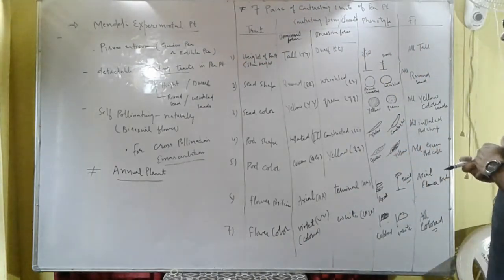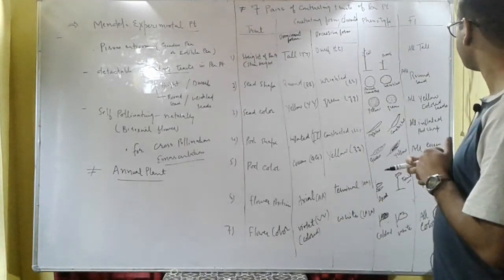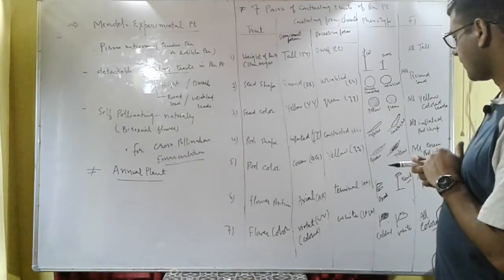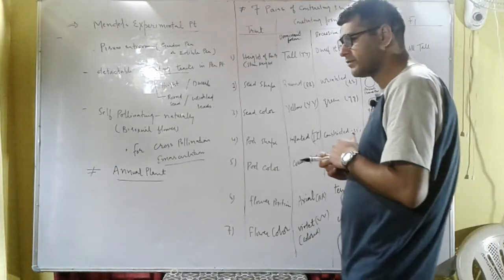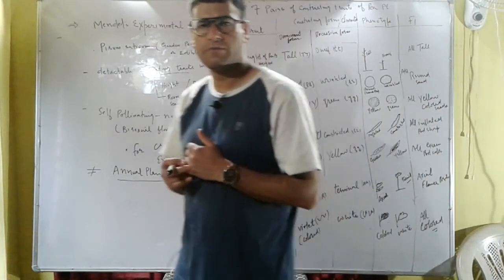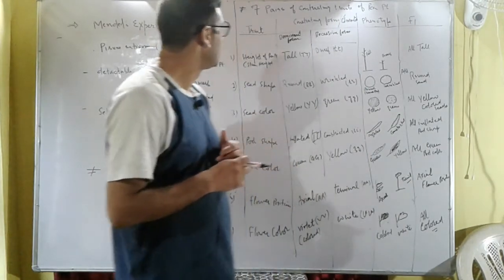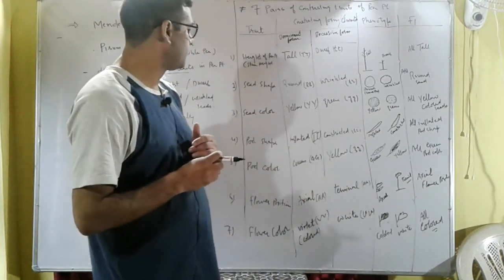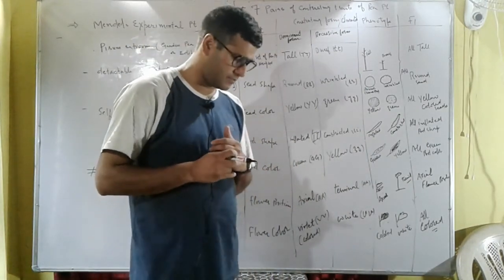So these are the seven pairs of contrasting characters of the pea plant which were selected by Mendel for his hybridization experiments.